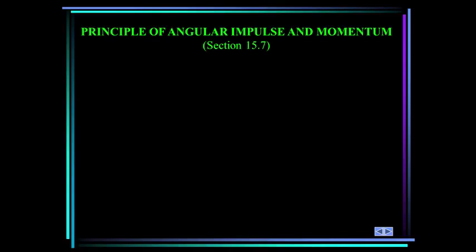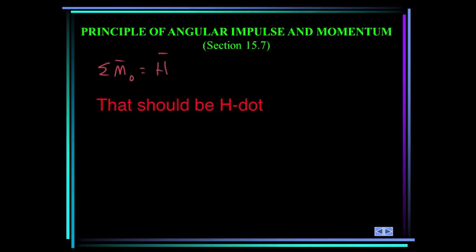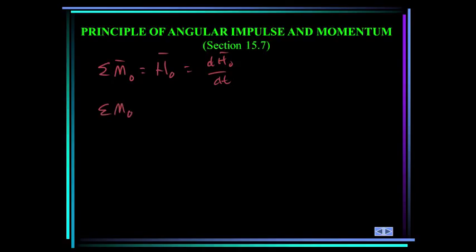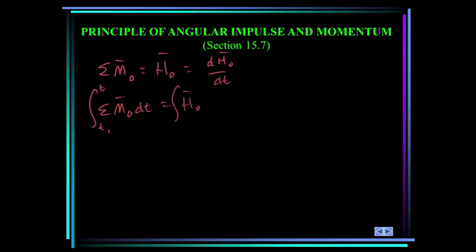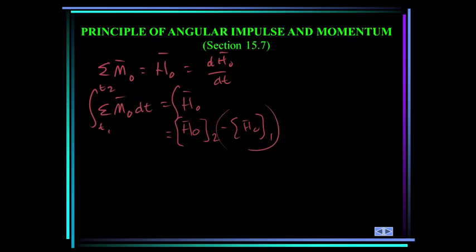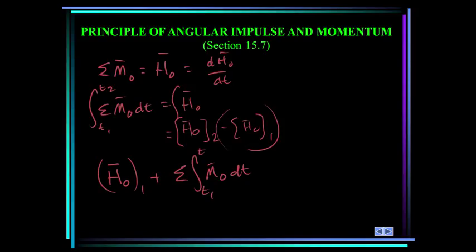Now we move into section 15.7, the principle of angular impulse and momentum. The summation of moments about a fixed point O equals the time rate of change of the angular momentum about O, which I can write as dH/dt. Bringing dt to the other side and integrating from t1 to t2, the right side becomes the angular momentum about O at state 2 minus the angular momentum at state 1. Rearranging, the angular momentum at state 1 plus the summation of all moments about O integrated over time between states 1 and 2 equals the angular momentum of the system at state 2.